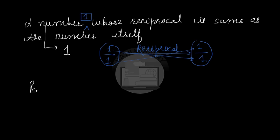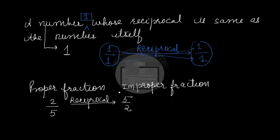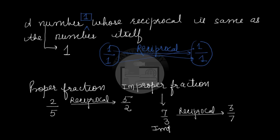If we have a proper fraction, say 2 by 5 — a proper fraction is a fraction in which the numerator is less than the denominator — when we find its reciprocal we get 5 over 2. So 2 over 5 is a proper fraction and 5 over 2 is an improper fraction; the reciprocal of a proper fraction is an improper fraction. Similarly, if we have a fraction 7 over 3, it's an improper fraction and its reciprocal is 3 over 7, so the reciprocal of an improper fraction is a proper fraction.